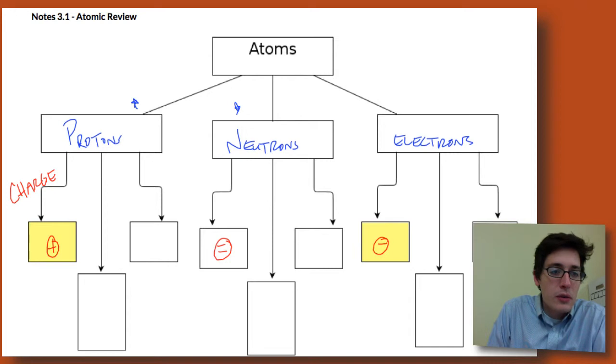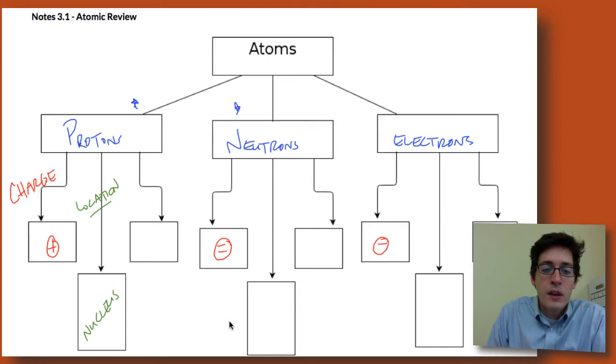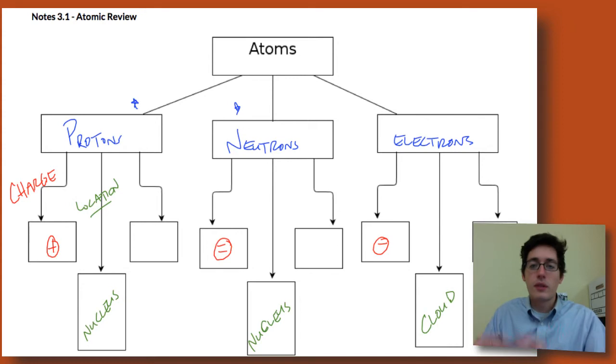The second box, we'll do this one in green, this is its location. So where in the atom is it? Well, the protons are in the nucleus. Neutrons are also found in the nucleus. And electrons are in the cloud, or in the shells, or the rings, or on the outside, or whichever term you remember from the last chapter.